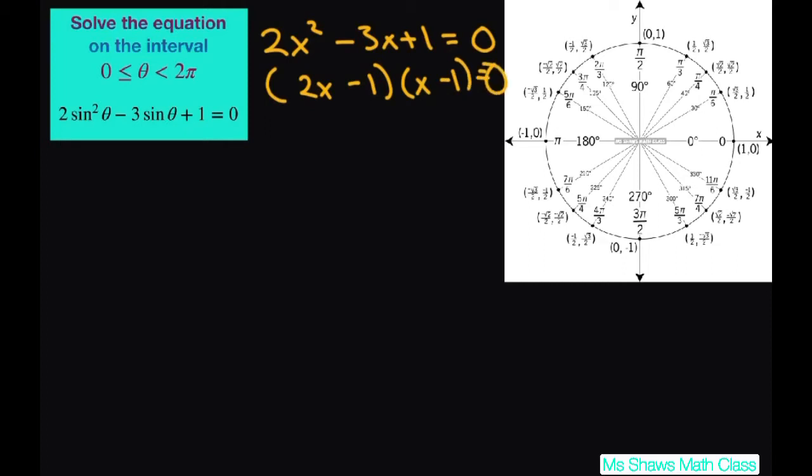Using the zero product property, we're going to do the same thing. Instead of x, you're just going to write sine. So you have (2 sin θ - 1)(sin θ - 1) = 0.